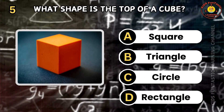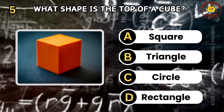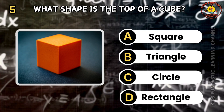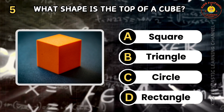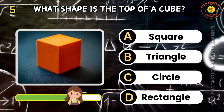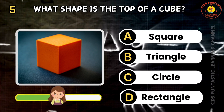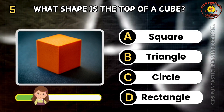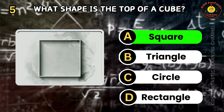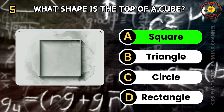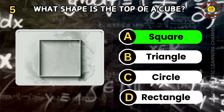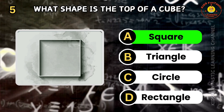Question 5. What shape is the top of a cube? A: square, B: triangle, C: circle, D: rectangle. You're on fire! The correct answer is A. The top of a cube is a square.